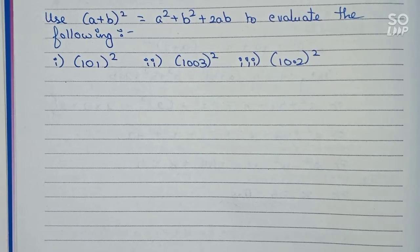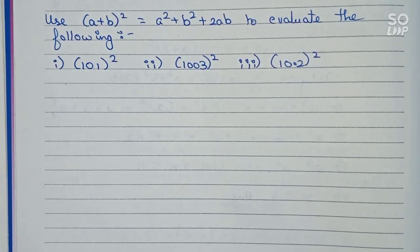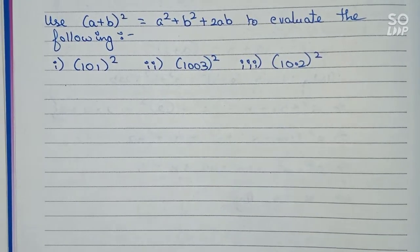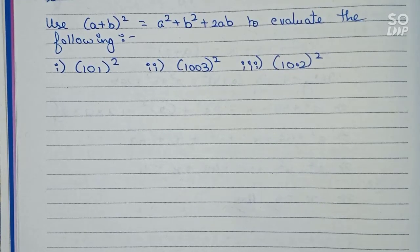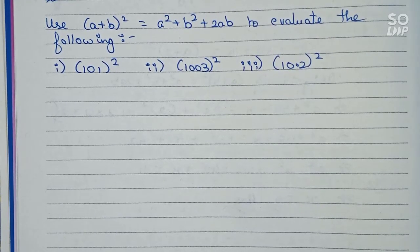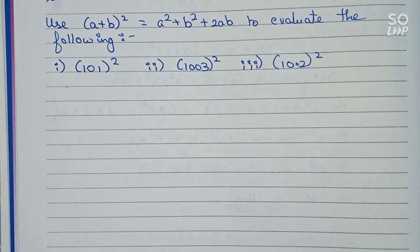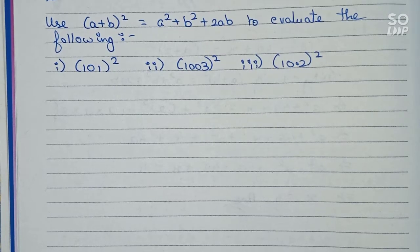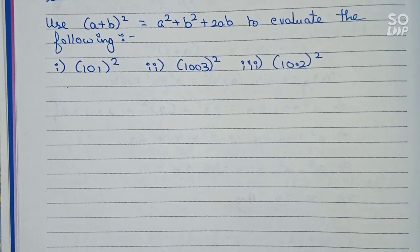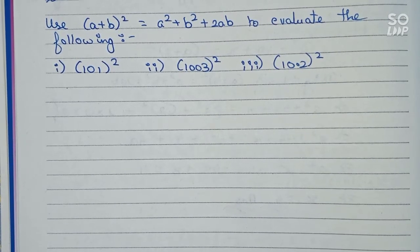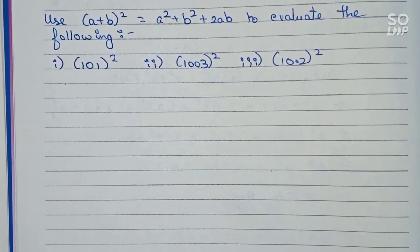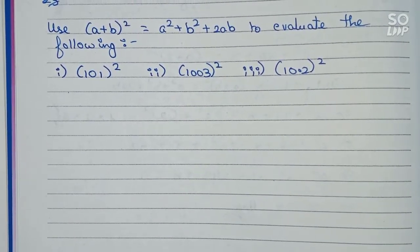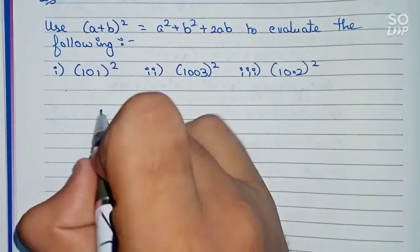Hello guys, welcome to this video. In this video, our question is to use the formula (a + b)² = a² + b² + 2ab to evaluate the following: number one, 101 whole square; number two, 1003 whole square; and number three, 10.2 whole square. So these are the questions we will solve. Let's start with question number one.